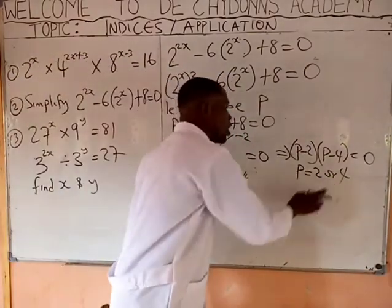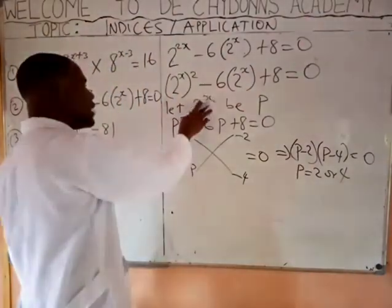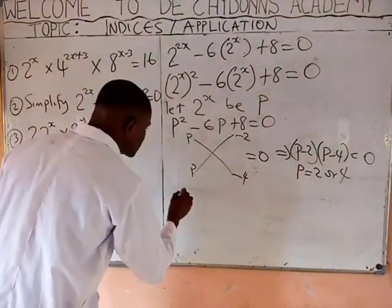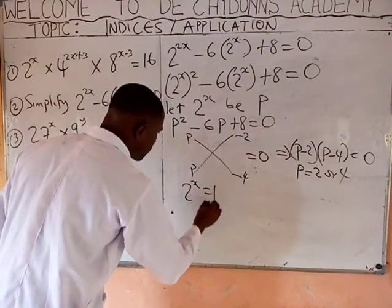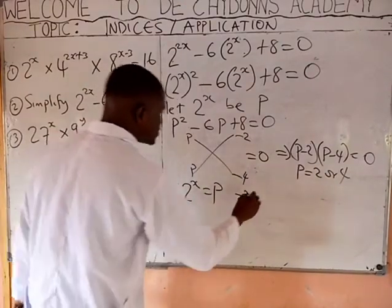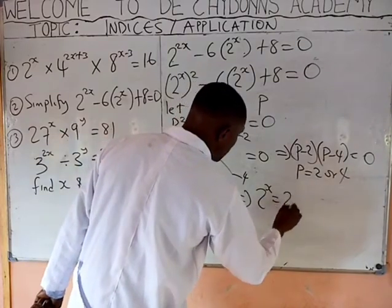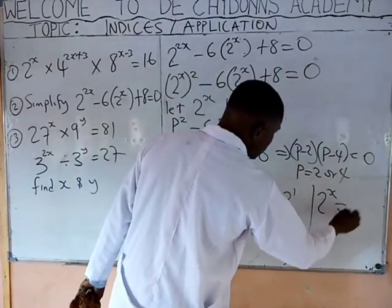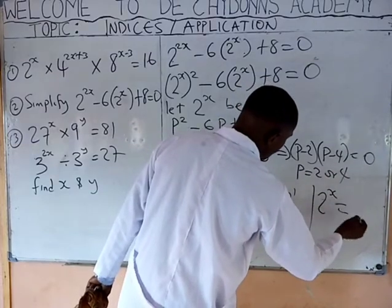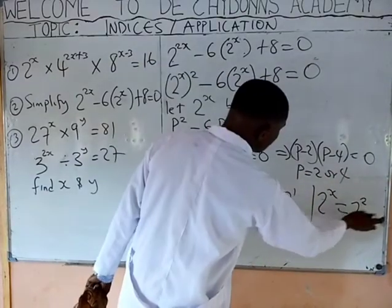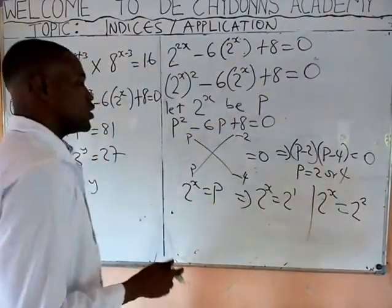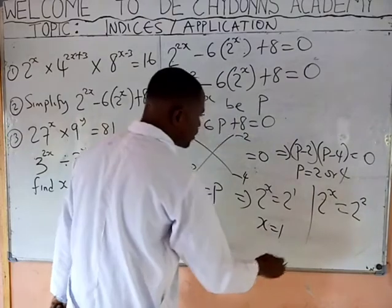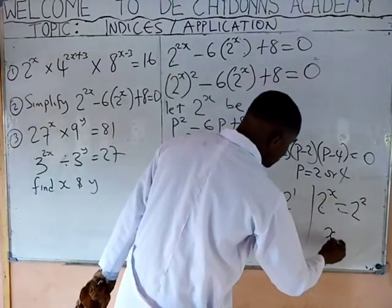This answer is not your final answer, because you said 2 raised to the power of X equals P. So since 2 raised to the power of X equals P, it implies 2 raised to the power of X equals the first value 2, which is 2 raised to the power of 1. Also, 2 raised to the power of X equals 4, that is 2 raised to the power of 2. Since base equals base, X equals 1, and X equals 2. These are the values of X for this question.